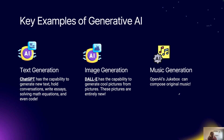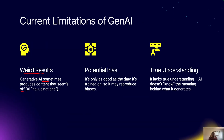Some examples of generative AI: the most famous one is ChatGPT, which has the ability to generate new text, hold conversations, write essays, solve math equations, and even write code. For image generation there is DALL-E, which has the capability to generate cool pictures from just text — and these pictures are entirely new. For music generation, we have OpenAI's MuseNet, which can compose original new music — that is really mind-blowing.